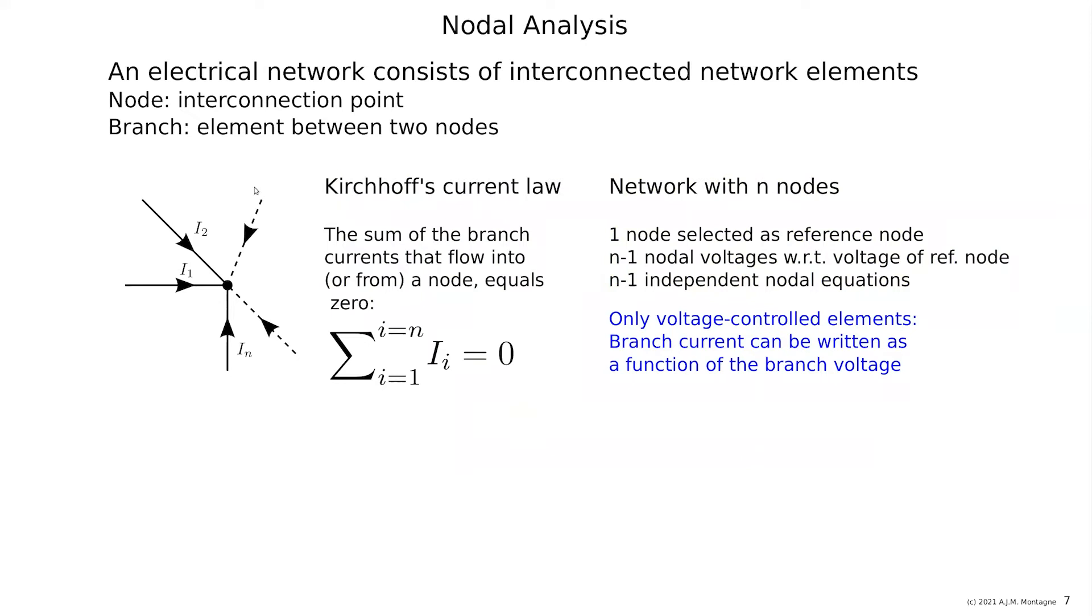Here you see that we are calculating with current. So the sum of the currents is zero. That's the basis for our calculation, which means we need to know currents as a function of the voltage in a branch. So the current as a function of the voltage in a branch, which means that those elements should have a voltage controlled notation. I is a function of V. And not all network elements have voltage controlled notations.